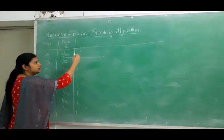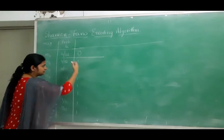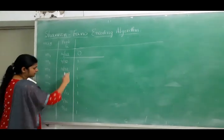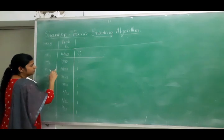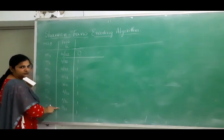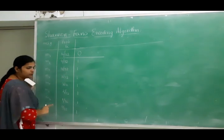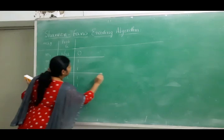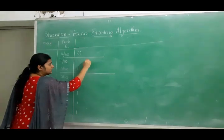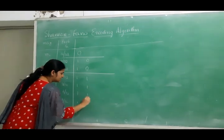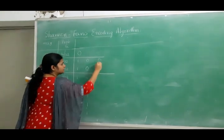For step four, since there are multiple messages with bit 1, I further subdivide. Taking m2 through m8, I divide again: 4/32 + 4/32 = 8/32 in the upper part, and the remaining sum is also 8/32. So the second division is after m3. I then assign 0 to the upper sub-group (m2, m3) and 1 to the lower sub-group (m4 through m8), giving them a second bit.